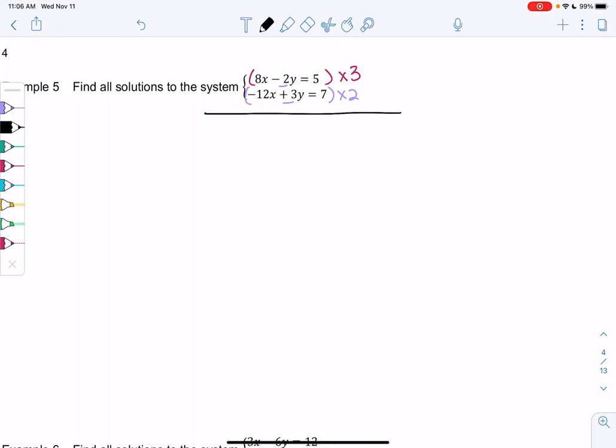So for the first equation, we get 3 times 8 is 24x minus 6y equals 15. Second equation gives me negative 24x plus 6y equals 14. So this one's weird, right? Because they're actually both eliminating, which is not what we expected. I was planning on eliminating the y's, but it looks like the x's happen to also eliminate. So if everything eliminates on the left, that means we get 0. And then what number do we get on the right side? 29.